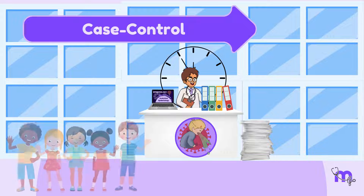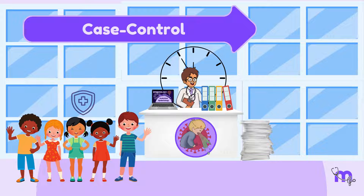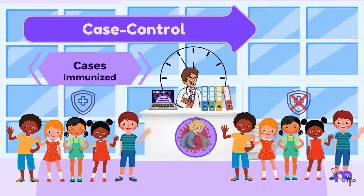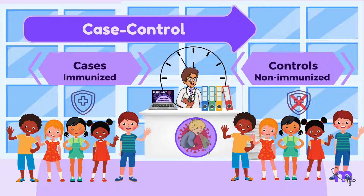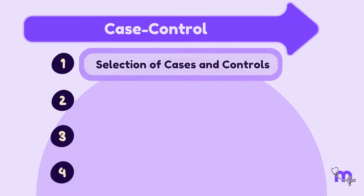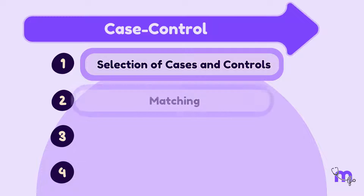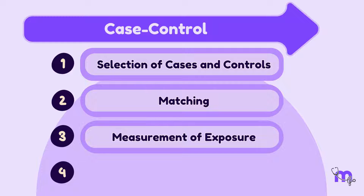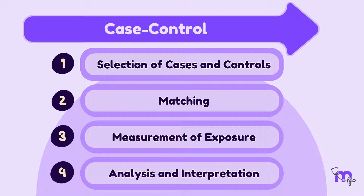For example, if I use the group of immunized children as cases, then the non-immunized children can be considered controls, and I look for factors of interest in their histories. In this design, I use a four-step approach: selection of cases and controls, matching, measurement of exposure, and analysis and interpretation.